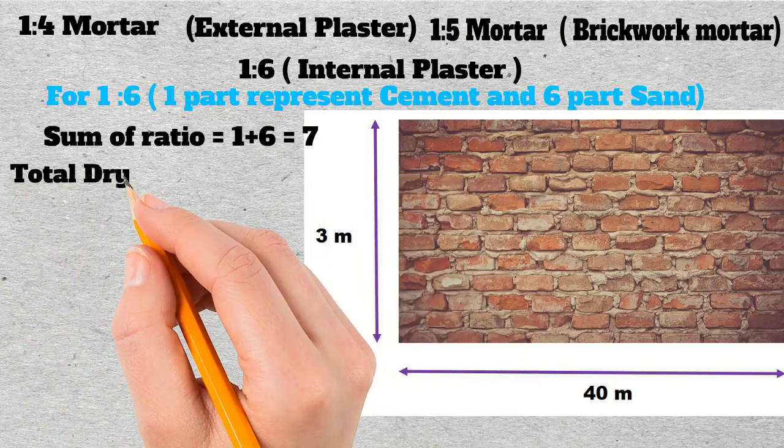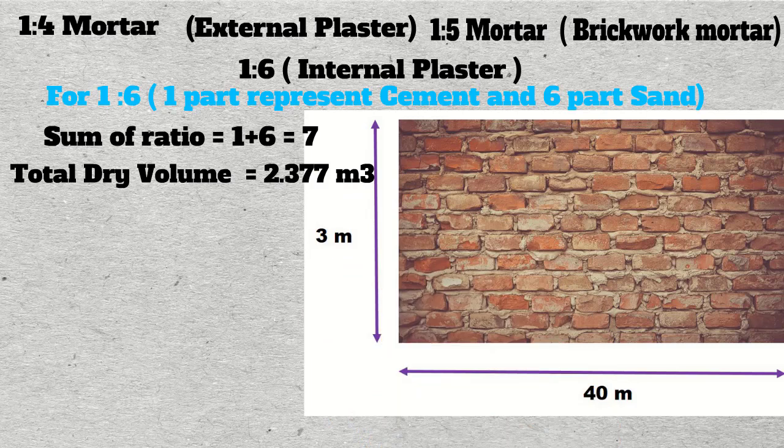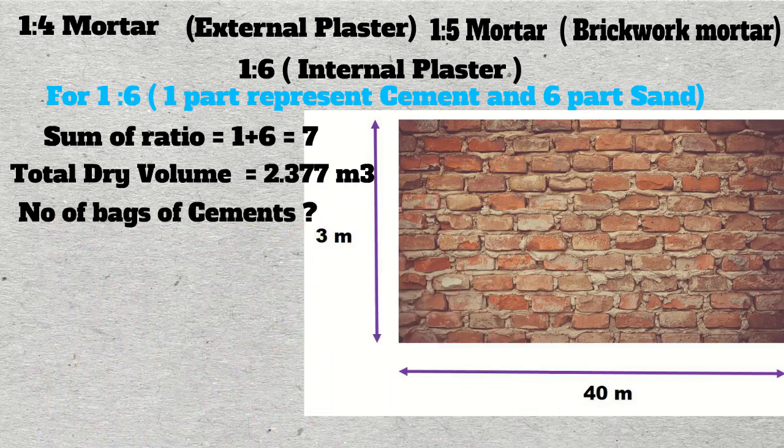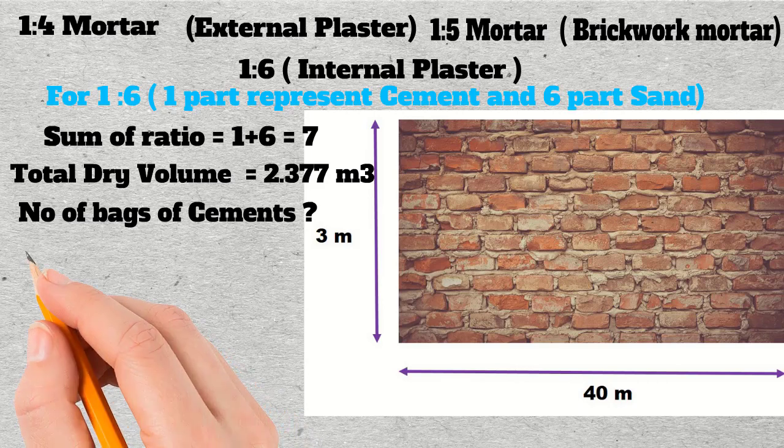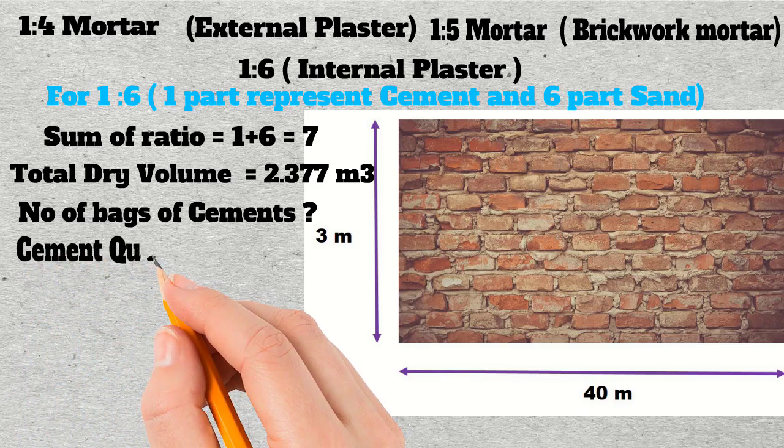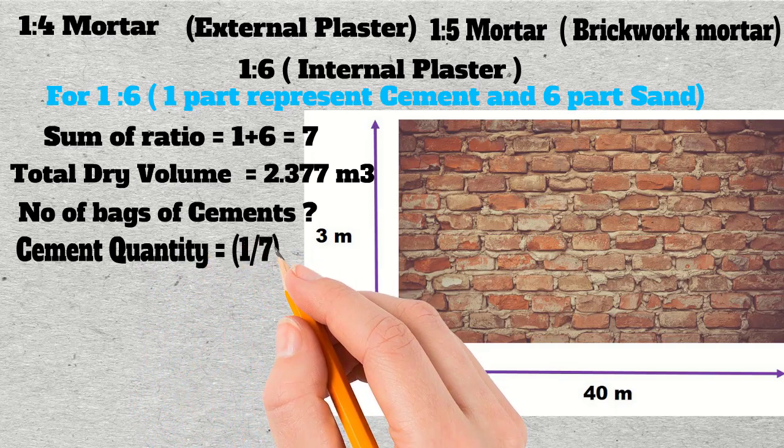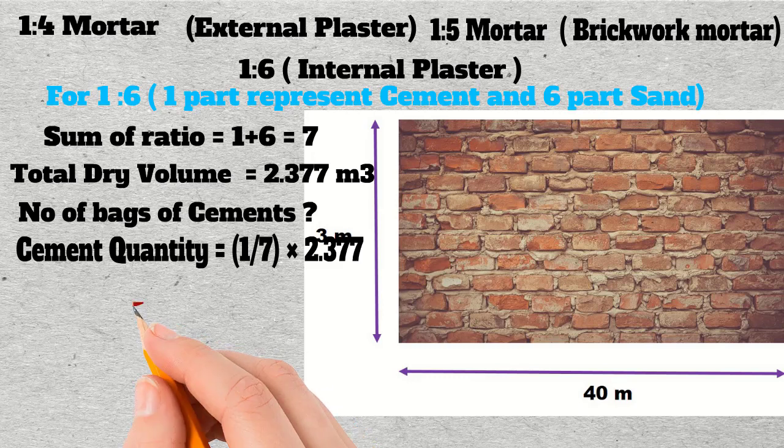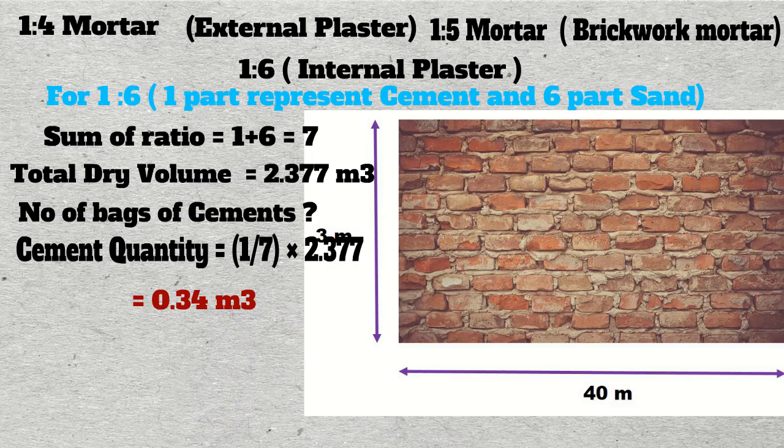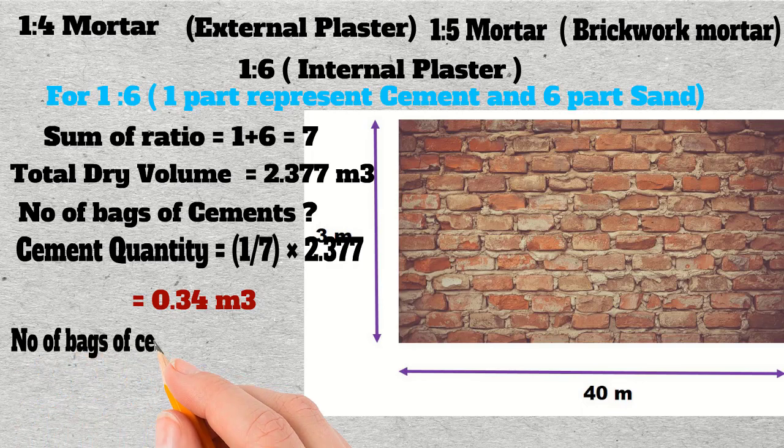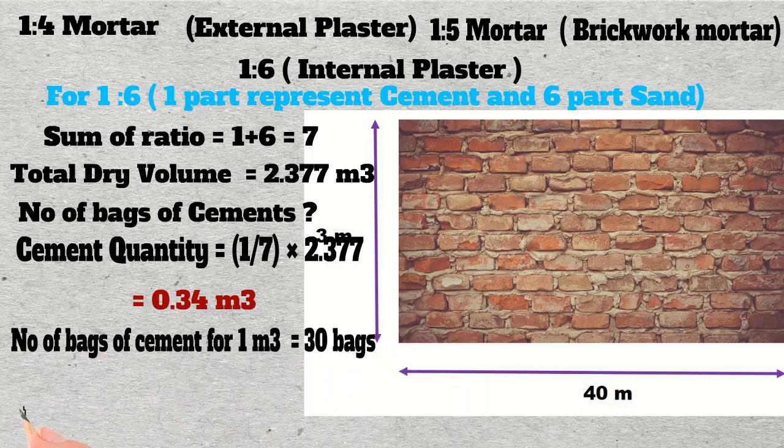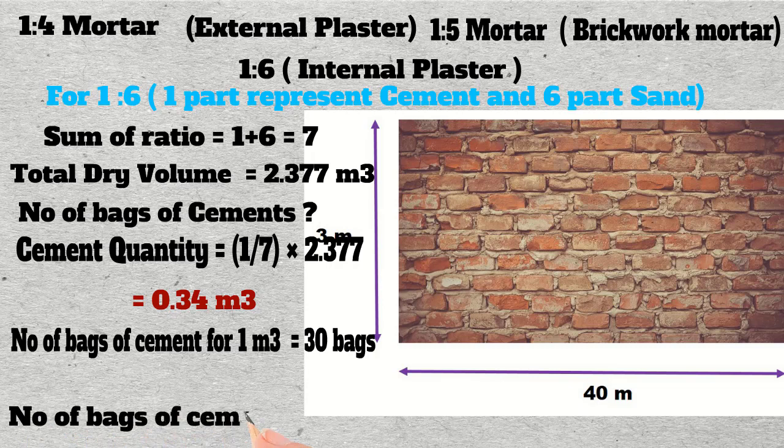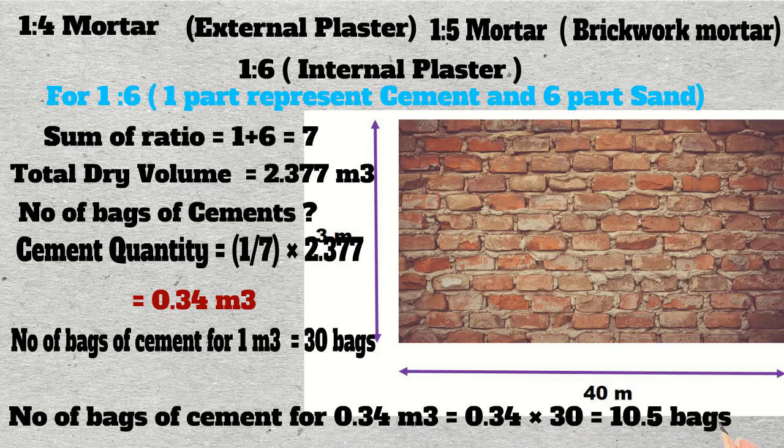We have the net quantity of mortar, that is 2.377 cubic meters. Then, in this much mortar, how many bags of cement will be needed? That is, find its ratio. Cement quantity equals 1 part of cement divided by the sum of ratio, which is 7, multiplied by the total quantity of mortar, 2.377 cubic meters. By calculation, 0.34 cubic meters of cement is required. But in the market, cement is available in bags. Let's change this to number of bags. The number of bags in 1 cubic meter is around 30 bags. Number of bags for 0.34 cubic meters will be 0.34 multiplied by 30. By calculation, we need around 10.5 bags of cement.